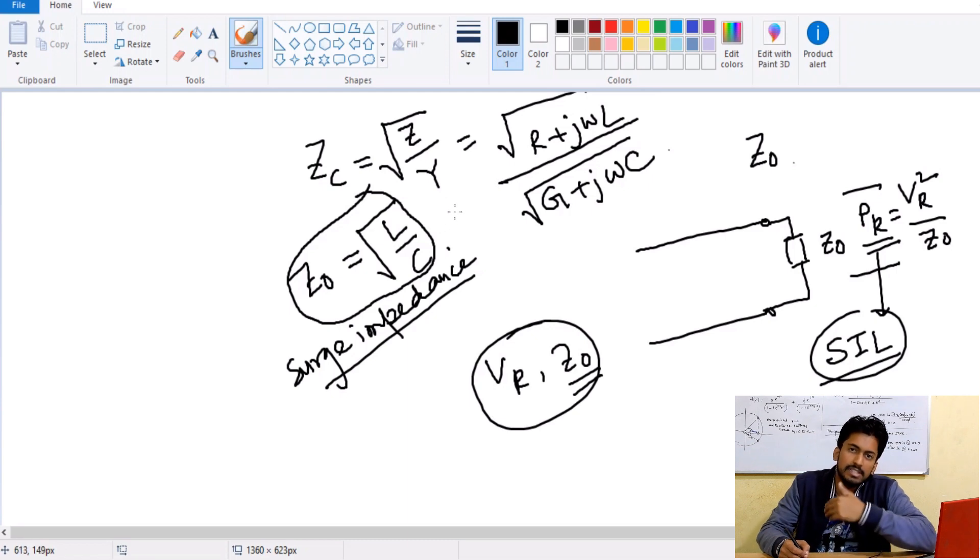And in the other case, if we connect the series capacitances, means we are adding capacitors in series to the line, then that stability part will be there, but the thing is that the impedance will not be that much smaller.